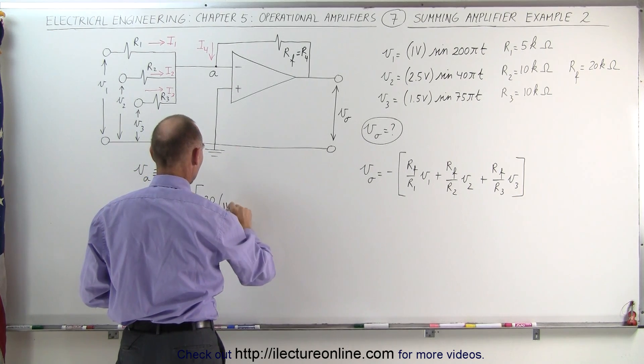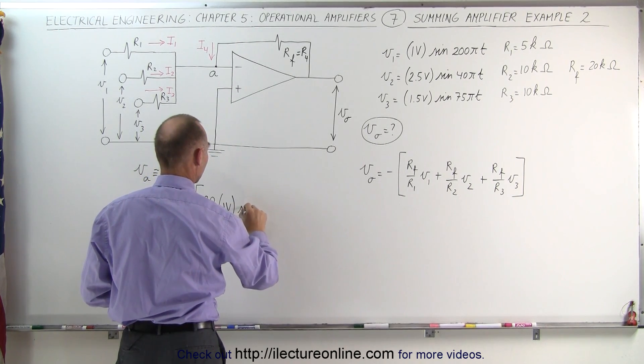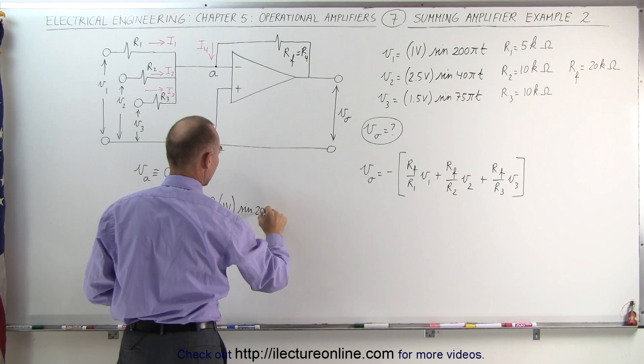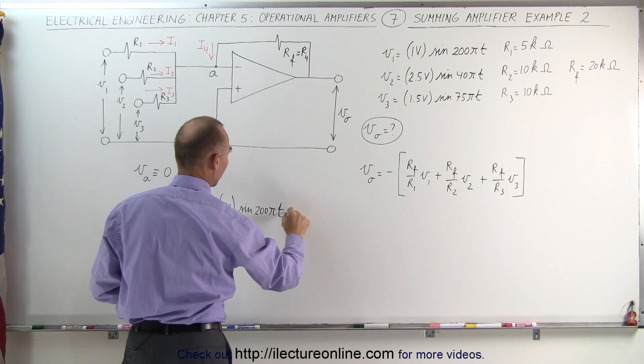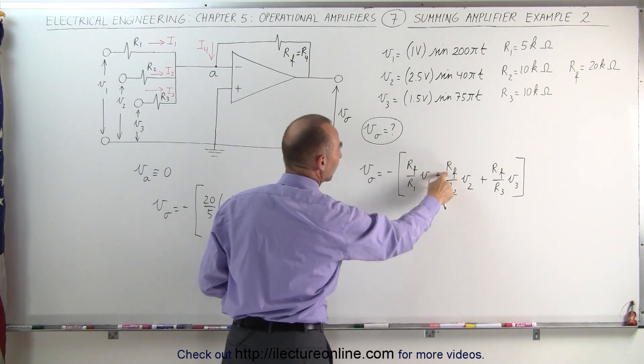Times 1 volt times the sine of 200 pi T, plus the ratio of R sub F to R sub 2, which is 20 to 10.